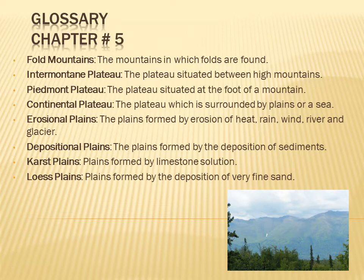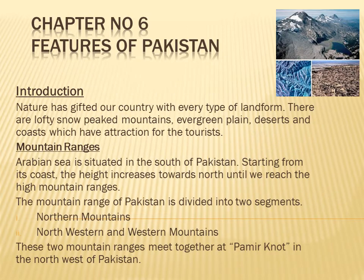Erosional Plains: the plains formed by erosion of heat, rain, wind, river, and glacier. Depositional Plains: the plains formed by the deposition of sediments. Karst Plains: plains formed by limestone solution. Loess Plains: plains formed by the deposition of very fine sand. Chapter 5 completed.